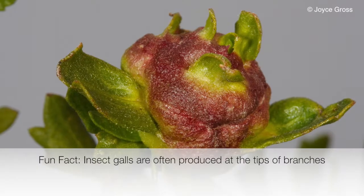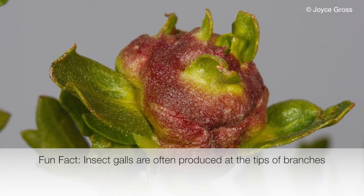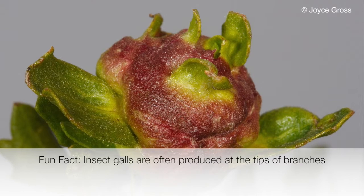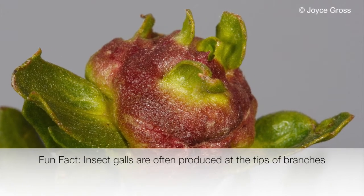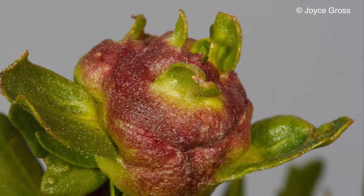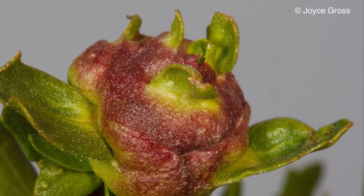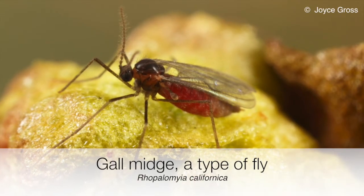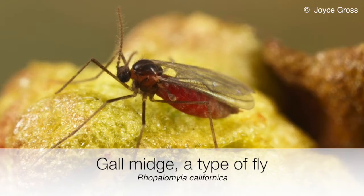Here's a fun fact. Insect galls are often found at the tips of branches where the plant produces new growth each year. The one we just saw is made by this fly, a gall midge.